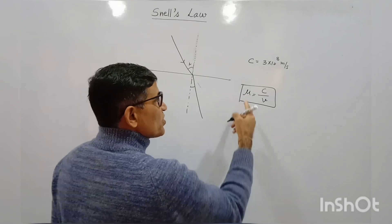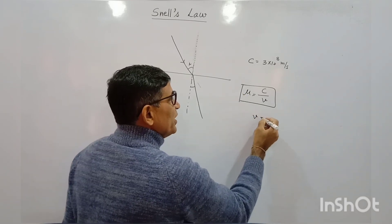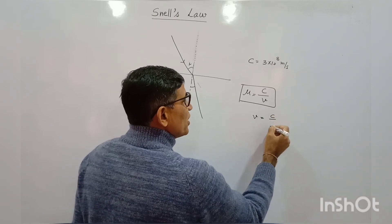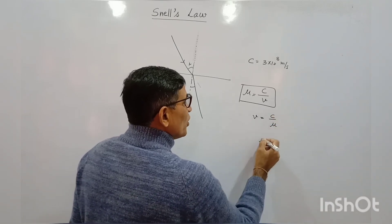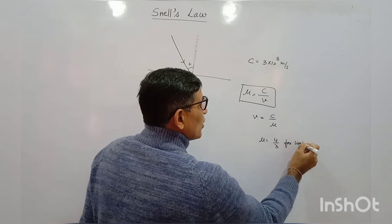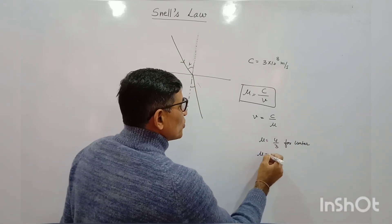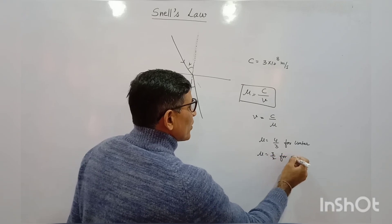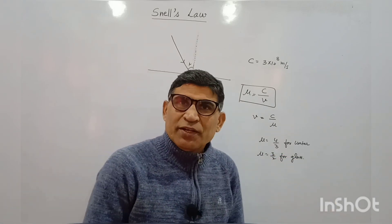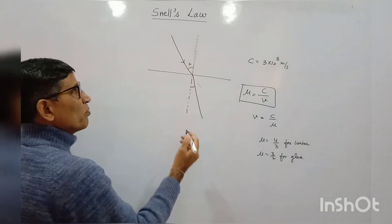For water, the refractive index is 4/3. We can find the speed of light in any medium by V = C/μ. For water μ = 4/3, and for glass μ = 3/2. Now let's prove why light bends towards the normal.